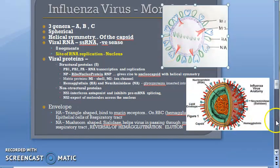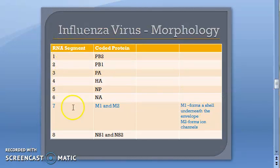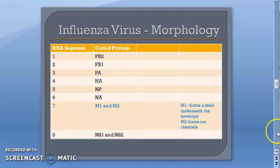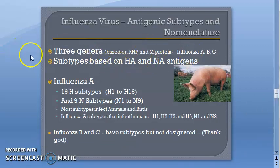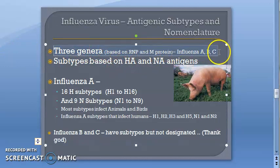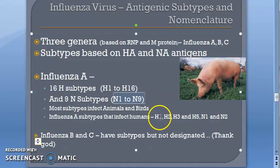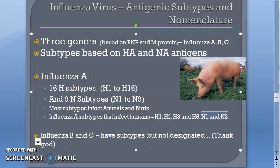The seventh RNA segment codes for M1 and M2; other segments code for other proteins. Regarding antigenic subtypes: influenza A, B, C are classified based on RNP and M proteins. Based on surface antigens HA and NA, influenza A has 16 H subtypes (H1–H16) and 9 N subtypes (N1–N9). For human importance: H1, H2, H3, H5, and N1 and N2.